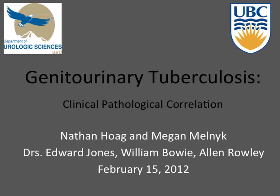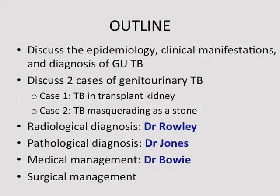Megan and I will be talking today about genitourinary tuberculosis. It's a clinical pathologic correlation rounds, and thanks very much to Dr. Jones, Dr. Bowie, and Dr. Rowley for coming to speak to us today. Our outline covers epidemiology, clinical manifestations, and the diagnosis of GU-TB. We have two cases: TB in a transplanted kidney, and TB masquerading as a stone. We'll also cover radiologic diagnosis, pathologic features, medical management, and surgical management.